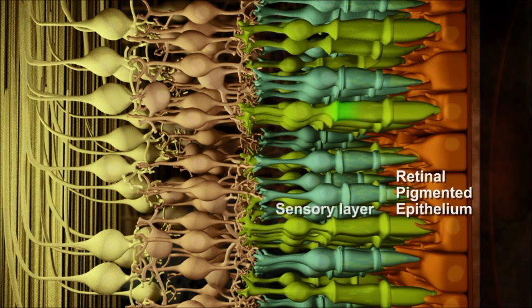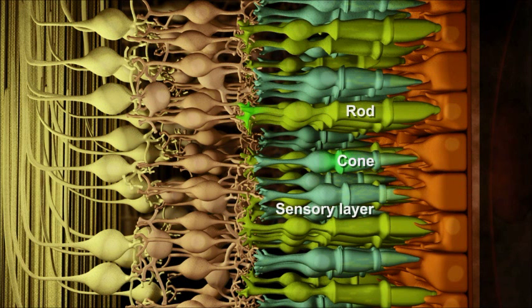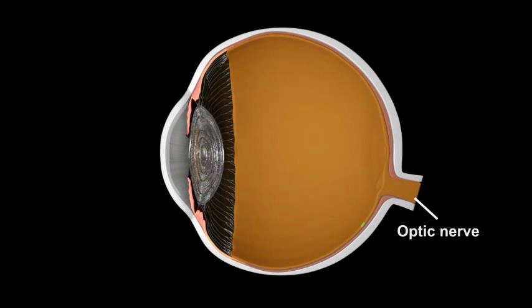The retina's sensory layer has rod and cone photoreceptors that detect and translate light information into nerve impulses. The signal is passed through the retina's layers of neurons and carried to the optic nerve located at the back of the eye, where the signal is gathered and sent to the brain.